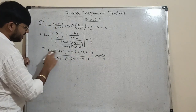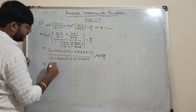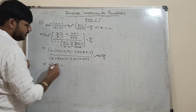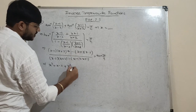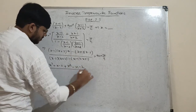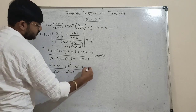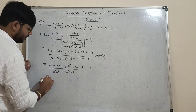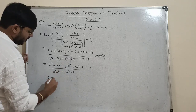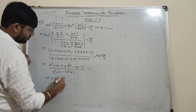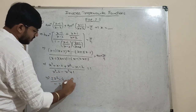Expanding by multiplication of brackets: numerator becomes (x²-x+2x+x-2) + (x²+x-2x-x-2) = 2x²-4; denominator is (x²-4) - (x²-1) = -3. So (2x²-4)/(-3) = 1.